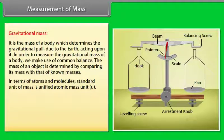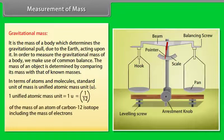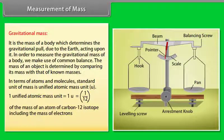The mass of an object is determined by comparing its mass with that of known masses. In terms of atoms and molecules, the standard unit of mass is unified atomic mass unit, that is U. One unified atomic mass unit is equal to 1 U is equal to 1 upon 12 of the mass of an atom of carbon 12 isotope, including the mass of electrons, is equal to 1.66 into 10 raised to the power minus 27 kg.